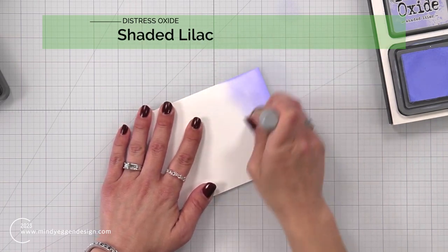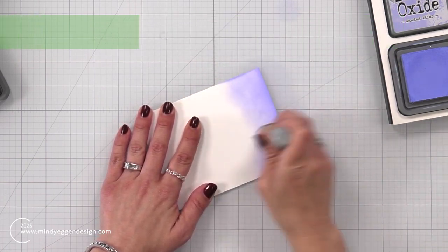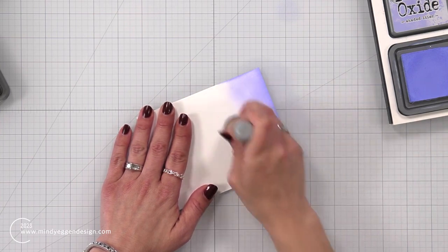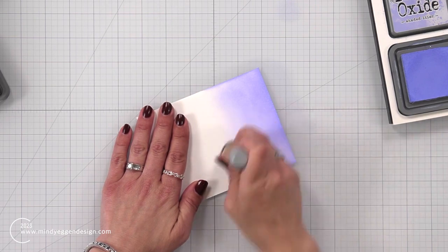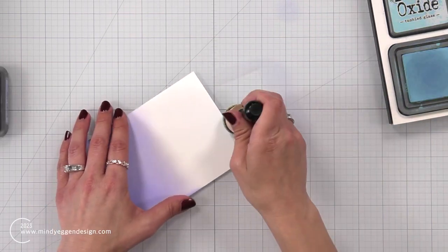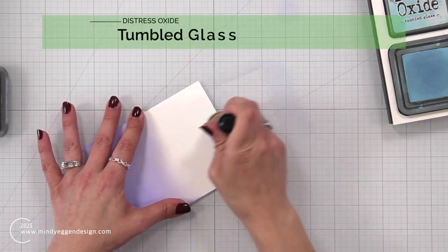Now I'm going to be ink blending a panel of white cardstock again. This is 80-pound white cardstock, and I started out with a shaded lilac. I have it kind of darker on one end. As I blend towards the center, I'm going to get lighter.